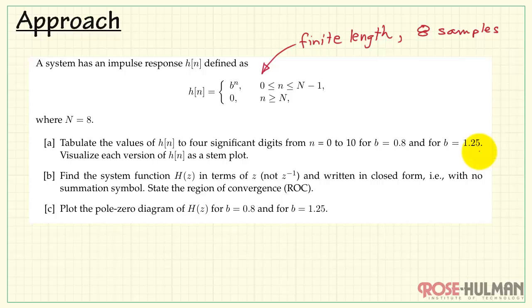We need to tabulate the values of our impulse response for two values of B and then visualize each version of the impulse response as a stem plot. A calculator or computer works best there. Part B we want the system function written out in closed form without a summation symbol. This is actually easiest if we proceed from the Z-transform definition.